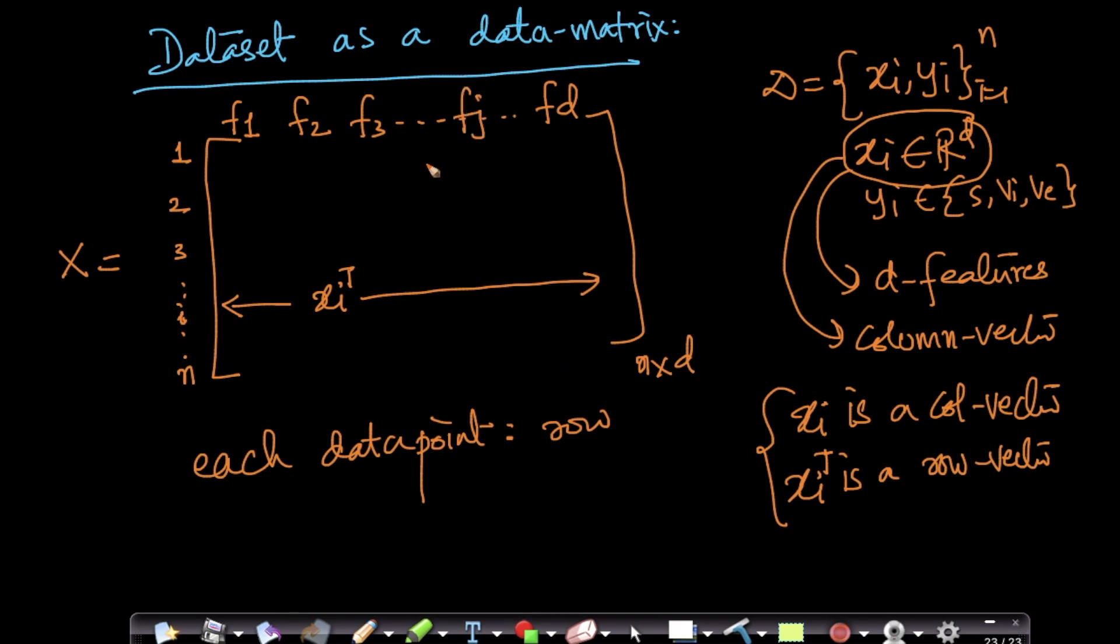So if I have fj here, this is my jth feature. This is one way of representing where each column represents a feature or a variable.